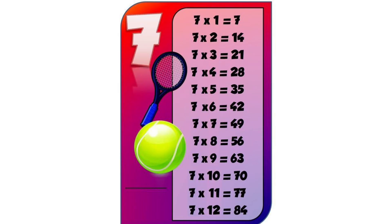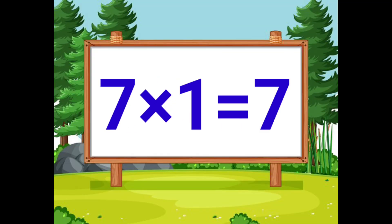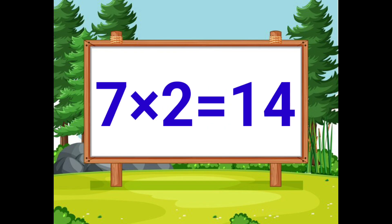Now we are going to see 7th table. 7 ones are 7. 7 twos are 14.